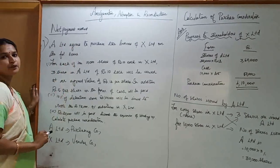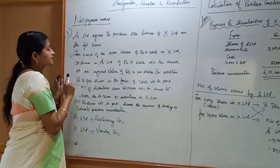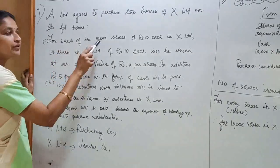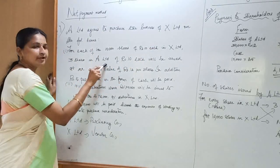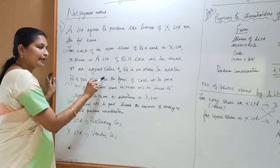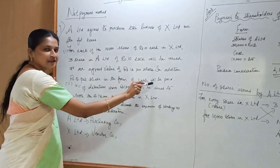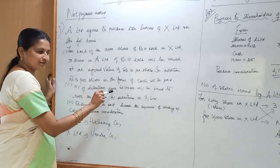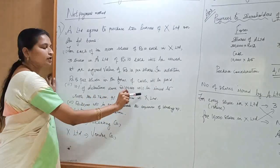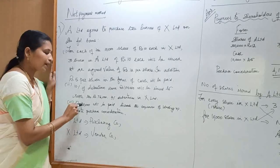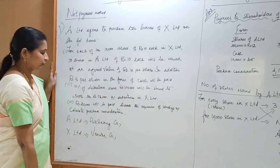This is a problem related to debt payment method. A Limited agrees to purchase the business of X Limited on the following terms: for each of the 10,000 shares of rupees 10 each in X Limited, 3 shares in A Limited of rupees 10 each will be issued at an agreed value of rupees 12 per share. In addition, rupees 5 per share in the form of cash will be paid. Second, 10% debentures worth rupees 1 lakh will be issued to settle the rupees 75,000 9% debentures in X Limited. Third, rupees 20,000 will be paid towards the expenses of winding up. We are asked to calculate purchase consideration.